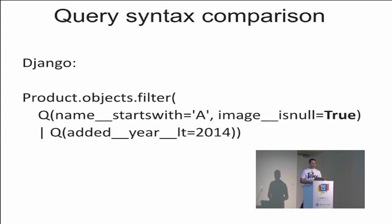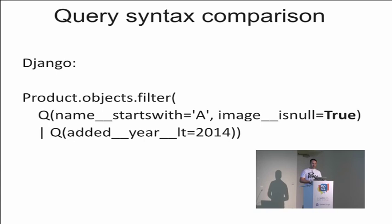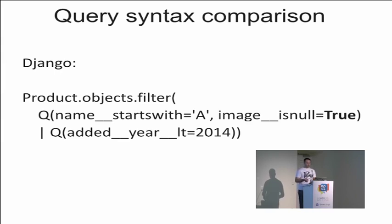This is the same query in Django. The Product class in Django has the objects attribute — it is a manager used for querying. In our example we have both AND and OR conditions. We can express AND condition just by providing a comma-separated list. But in order to express OR condition we have to use the special Q object, and then combine those conditions with the bitwise OR operator. In Django we have to use double underscores to apply specific conditions such as startswith, isnull, and less-than.